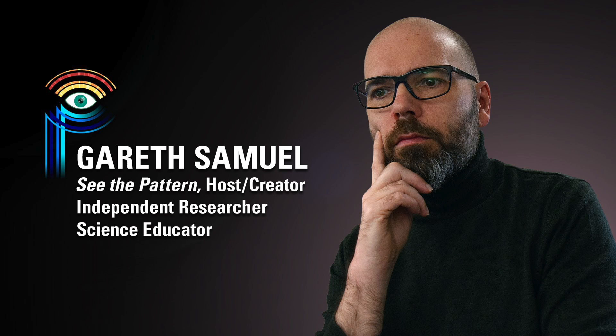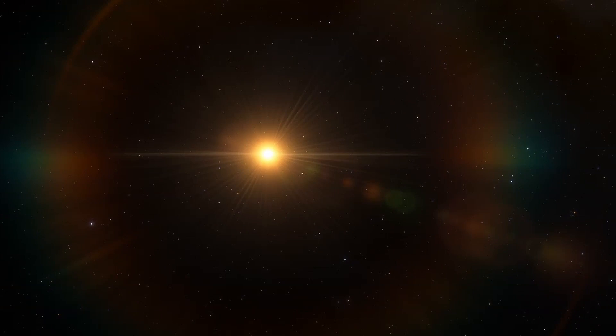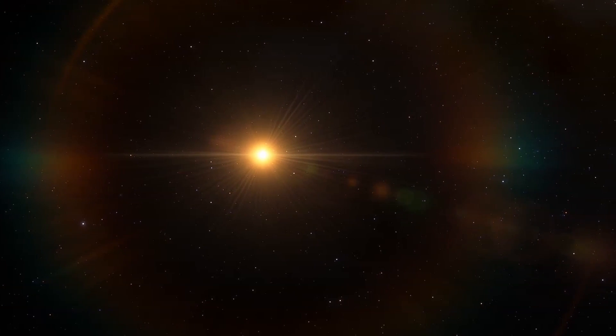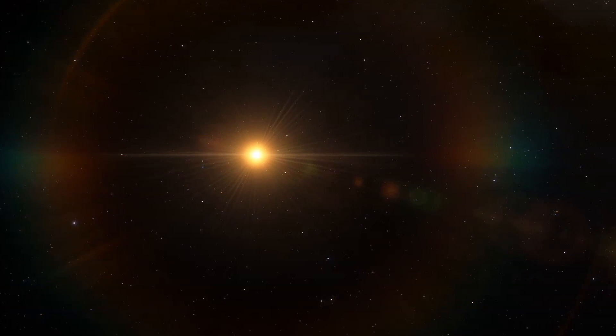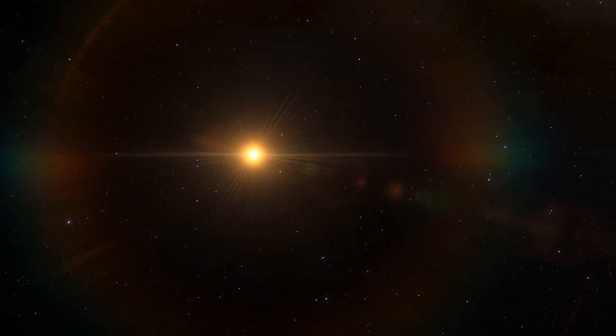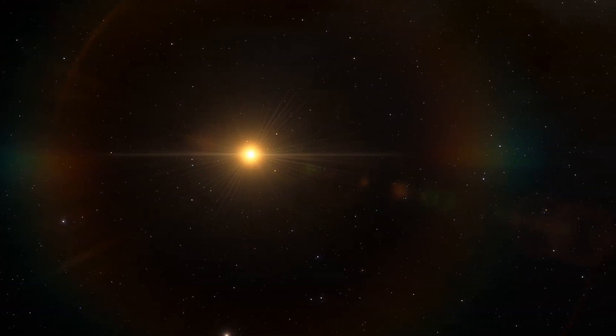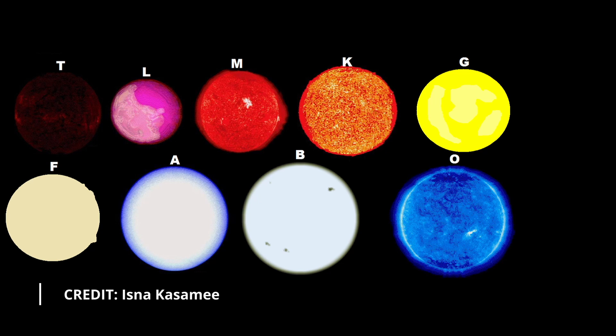It is also possible that a combination of these factors is at play rather than just a single one. The next question is the question of where intelligent life is likely to develop. Here it is interesting to point out that the article only focuses on the contrast between a yellow dwarf and a red dwarf star. What about the other star types?